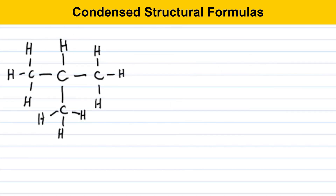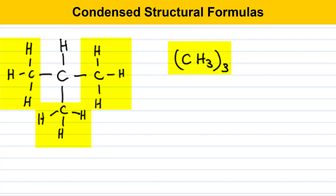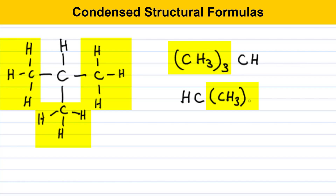Here, we're going to look at another example of converting a Lewis structure to a condensed structural formula. A lot of times, there's more than one correct condensed structural formula that you can write for a given Lewis structure, and that's certainly the case with this example. One strategy is to recognize that there are three CH3 groups attached to a central carbon, and you can represent those with CH3 in parentheses with a subscript 3. Then you just finish the structure by drawing CH to represent the central carbon and hydrogen attached. Another equivalent way to represent this molecule would be to first write HC to represent the central carbon and its attached hydrogen, and then draw the three CH3 groups afterwards. Both representations mean the same thing, and they're equally correct.